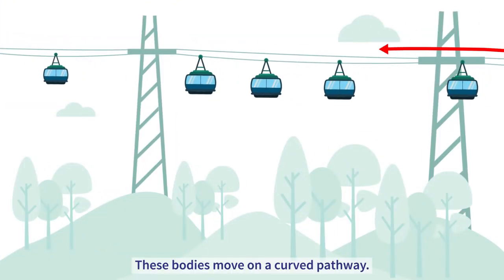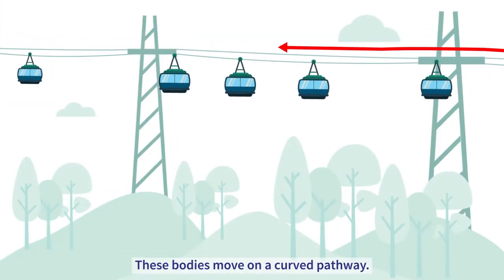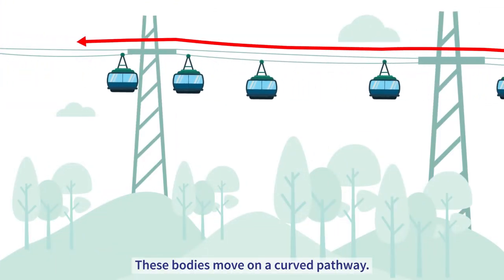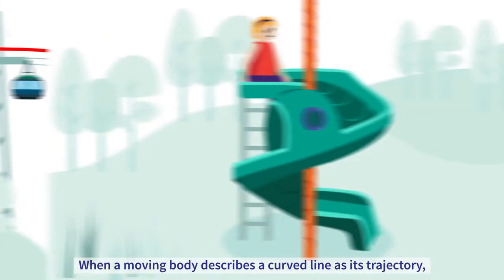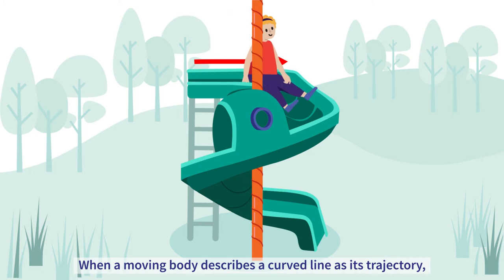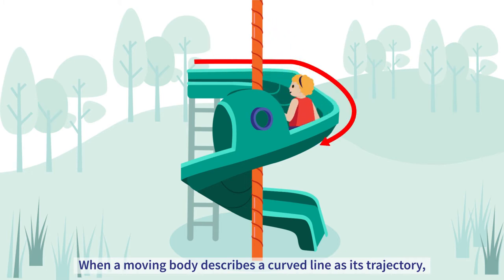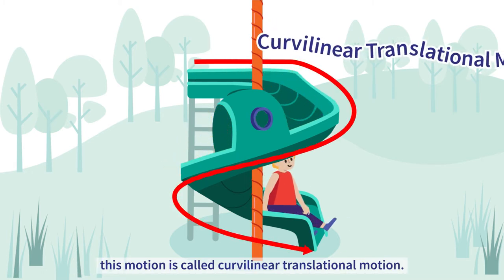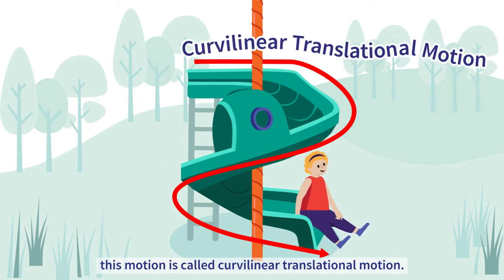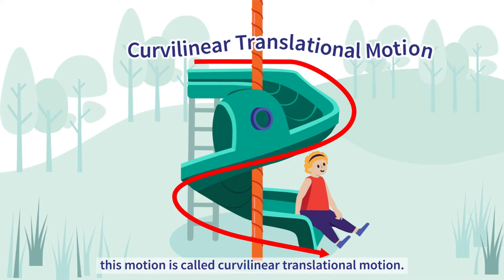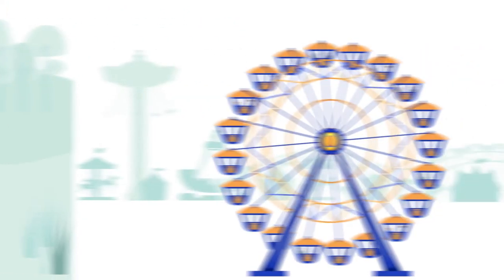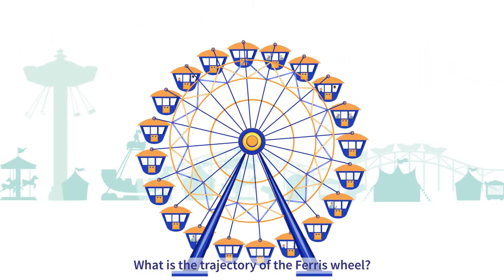These bodies move on a curved pathway. When a moving body describes a curved line as its trajectory, this motion is called curvilinear translational motion.